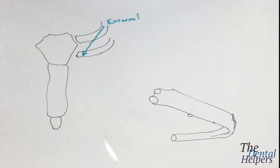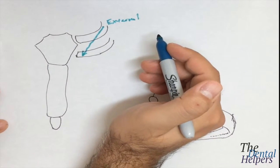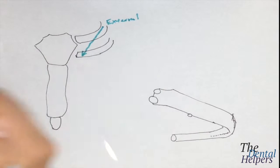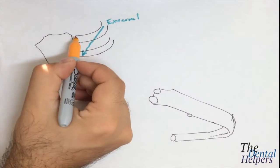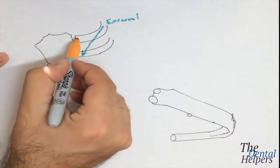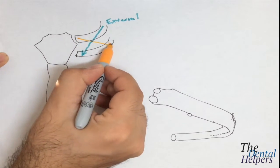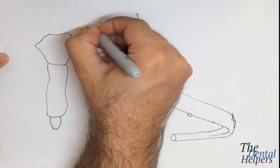The internal is going to be deeper to the external, and these fibers are going to go superior medial to inferior lateral. So we're starting superior medial and going inferior lateral — like this. This is the internal.